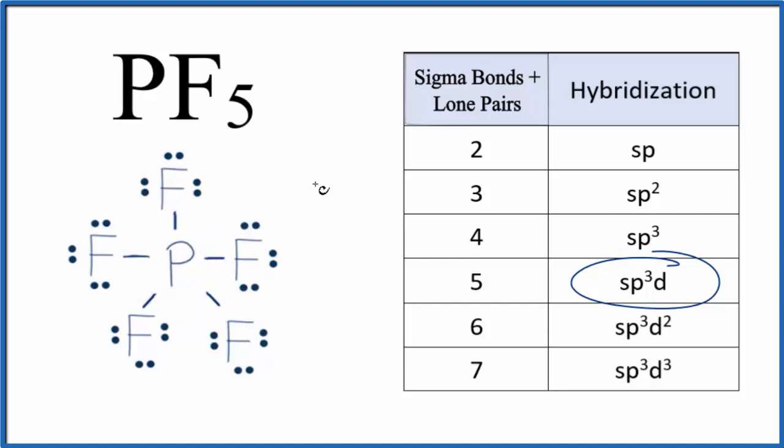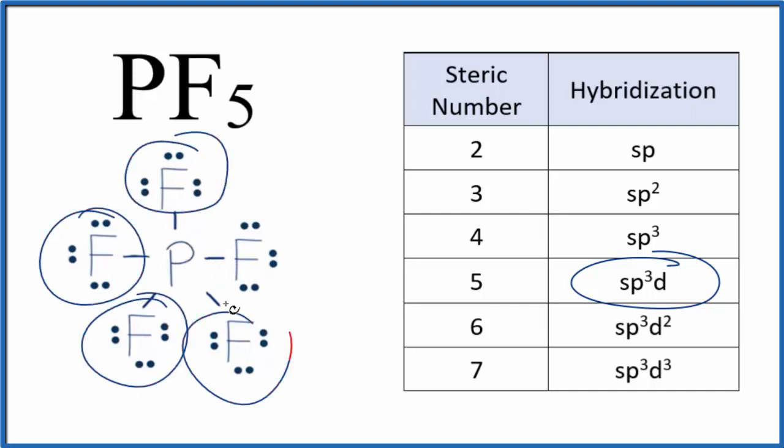The other way we can do this is we can take a look at what's called the steric number. The steric number, that's the number of electron domains or electron regions attached to the central atom here. So for the phosphorus, we have one, two, three, four, five.